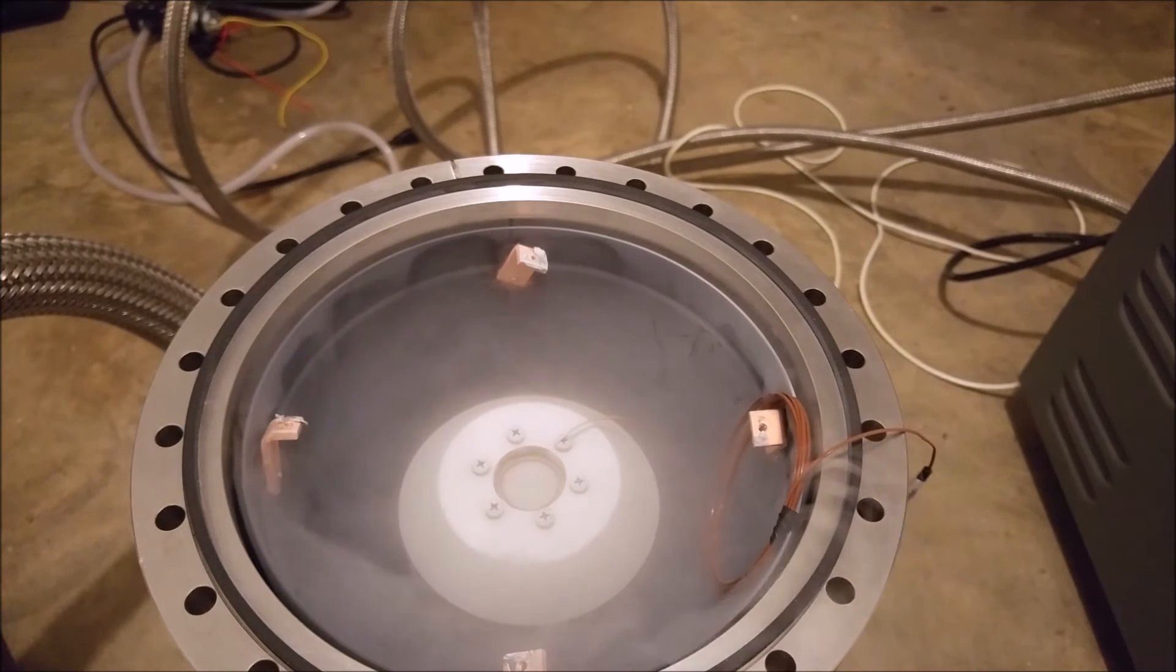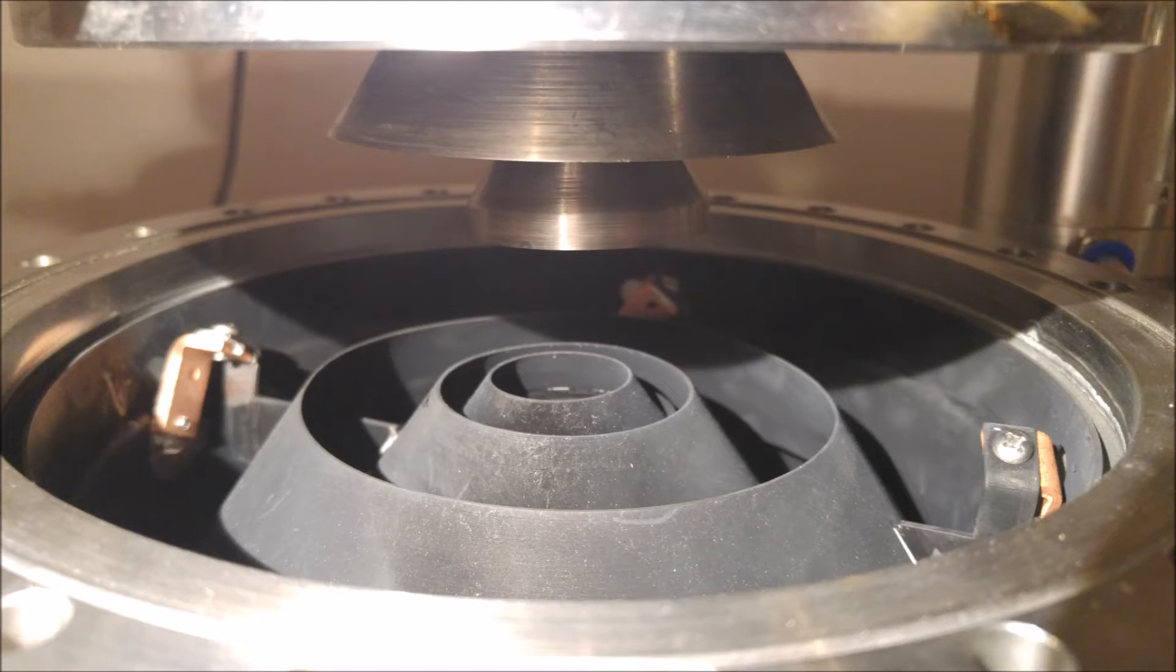But first, here's a basic explanation. A cryopump is a type of high vacuum pump that works by getting so cold that almost all the gases in the chamber condense. This happens on the cooling arrays, the black pieces you see on top.